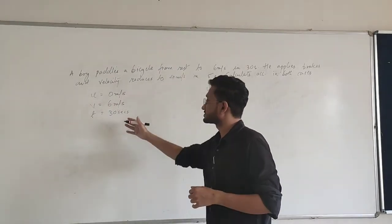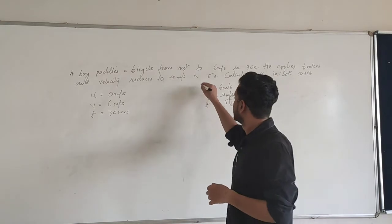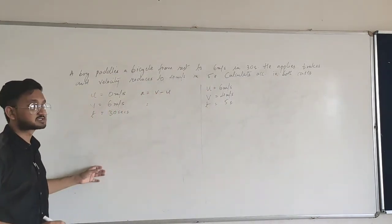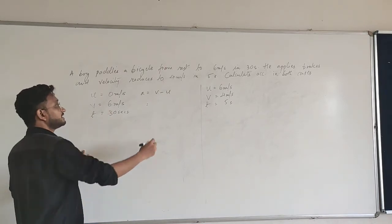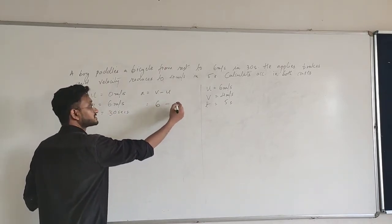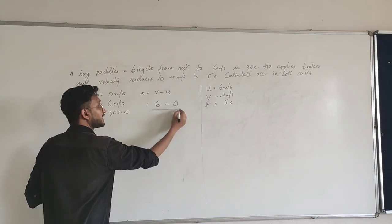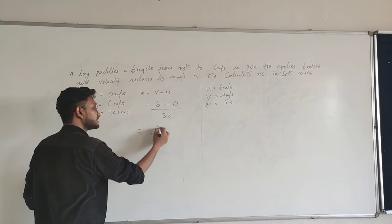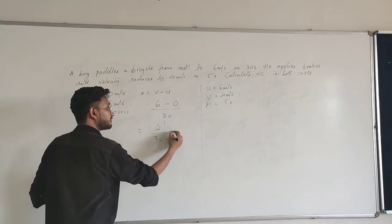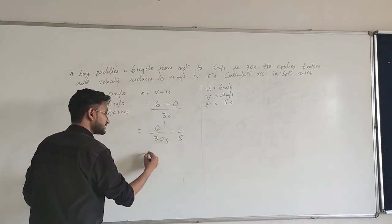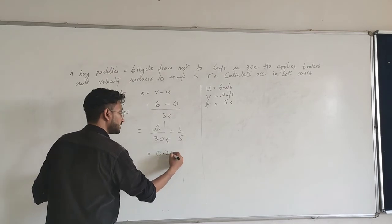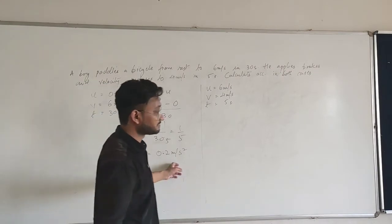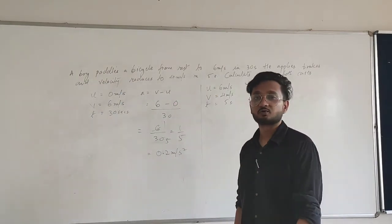We first solve the acceleration for the first case. A is equal to v minus u upon t — simple substitution of values. v is 6 meters per second, the initial velocity u is 0, and time t is 30 seconds. So we get 6 minus 0 over 30, which is 6 over 30, equal to 1 over 5, which equals 0.2 meters per second square. Very simple — that is the first part of the question.